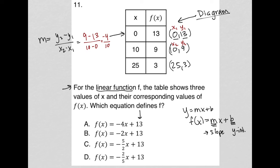Negative 4 divided by 10 could be simplified or reduced to negative 2 over 5. So my slope should be equal to negative 2 fifths. The answer that has a negative 2 fifths as a slope is choice D.